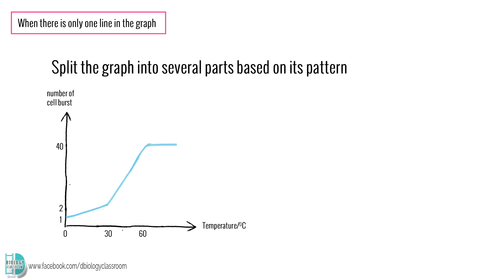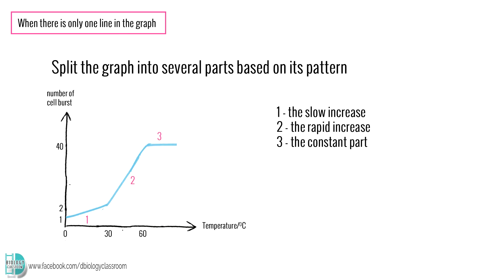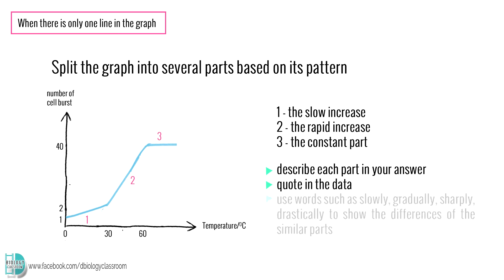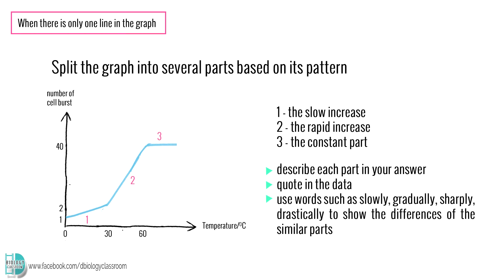For example, in this graph, I will separate it into three parts: first, the slow increase, then the rapid increase, and lastly, the constant part. Now, you can describe each part in your answer by quoting in the data. Use words such as slowly, gradually, sharply, or drastically to show the reason why you split the increasing parts into two.